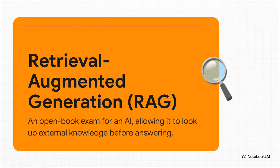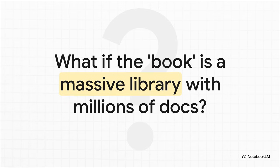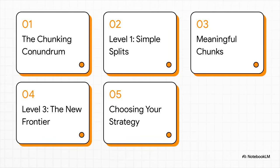Let's kick things off with the core concept: RAG, or retrieval augmented generation. The best way to think about this is like giving an AI an open book exam. Instead of just trying to remember everything from its training data, it gets to look stuff up in external documents to find the most accurate, up-to-the-minute info before it gives you an answer. But what happens when that open book isn't just a book, but a massive library — millions of documents, maybe a huge corporate knowledge base, or even the entire internet? You can't just hand the AI the whole library and say good luck. So how does it find the right page, or even the right sentence, in that ocean of information? The answer is a process called chunking.